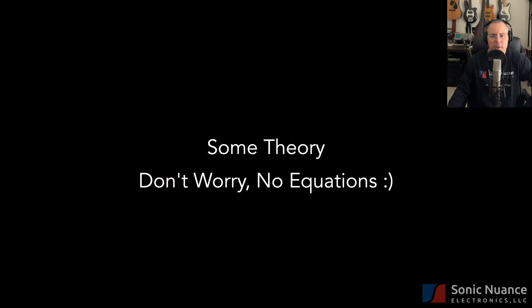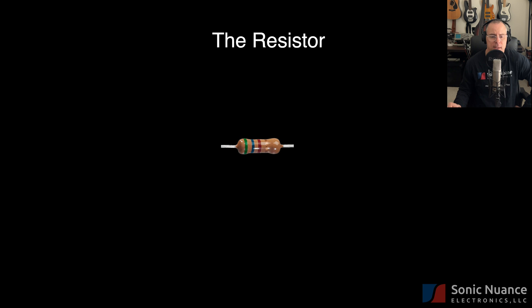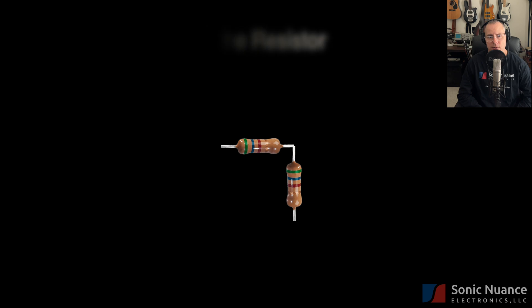We need a little bit of theory to talk about our volume control. And for that, we're going to start off with a component called a resistor. Seen here, a resistor does exactly what the name says. It resists the flow of electrical current and also provides something that we care about mostly for volume controls, a voltage dividing capability when you have more than one resistor in a circuit.